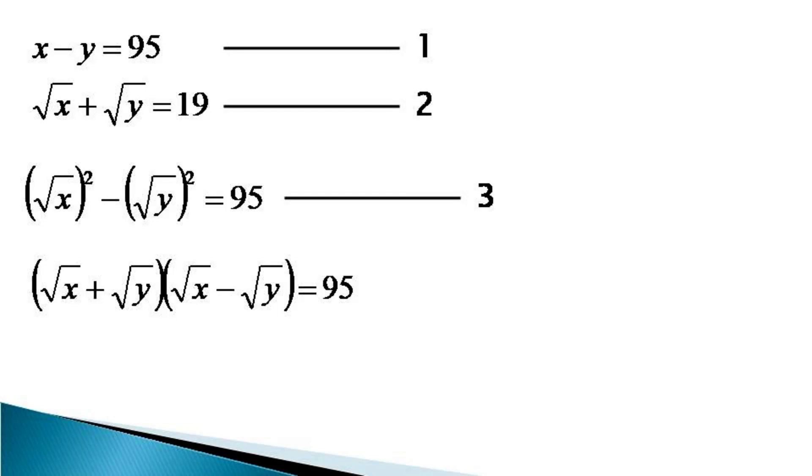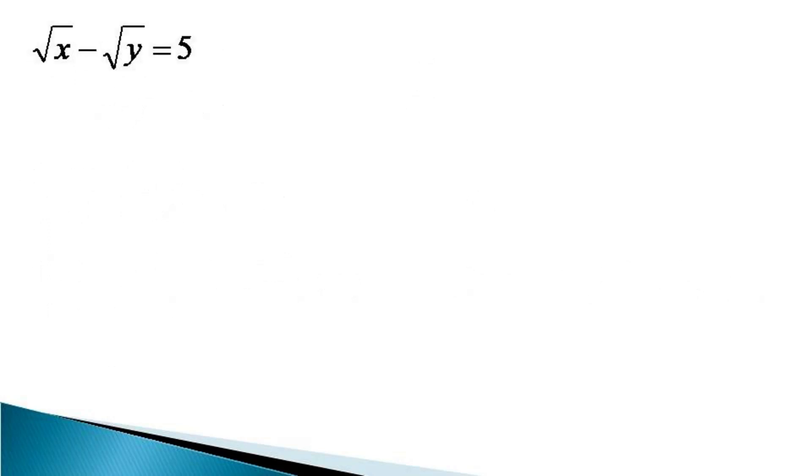Now from equation 2, we know that root X plus root Y is equal to 19. We put this value in the factorized equation 3 and we get 19 into root X minus root Y is equal to 95. On simplification, it gives root X minus root Y is equal to 5 and we designate it as equation 4.